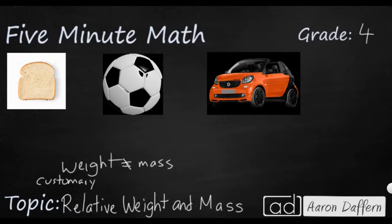Customary units are the units that we typically use in America. Weight is the act of gravity on an object, how much something weighs, how much gravity is pulling you down. So when you say you're 98 pounds or this weighs three ounces, that's actually how much gravity is pulling that object down.